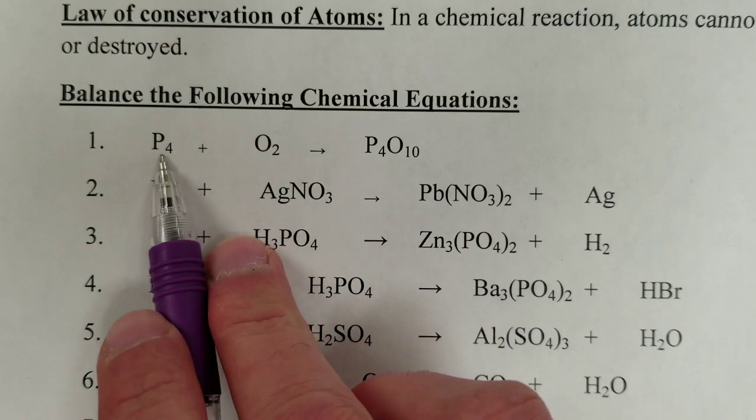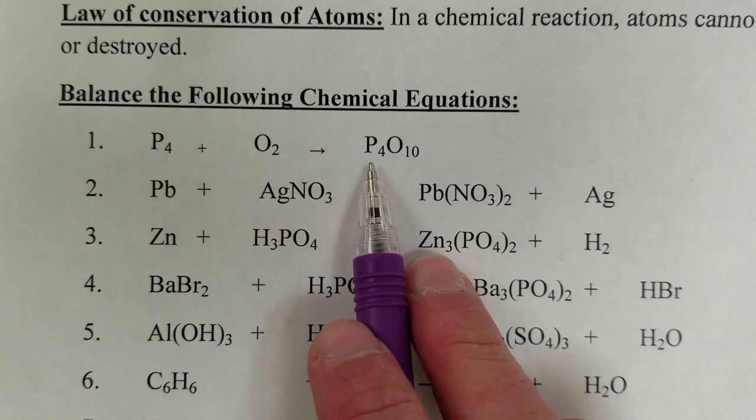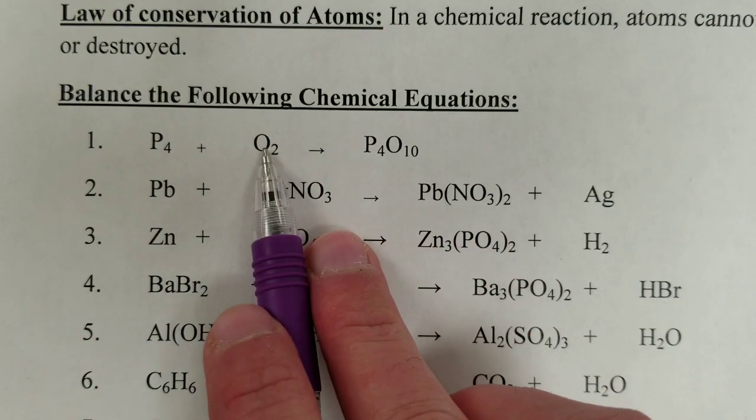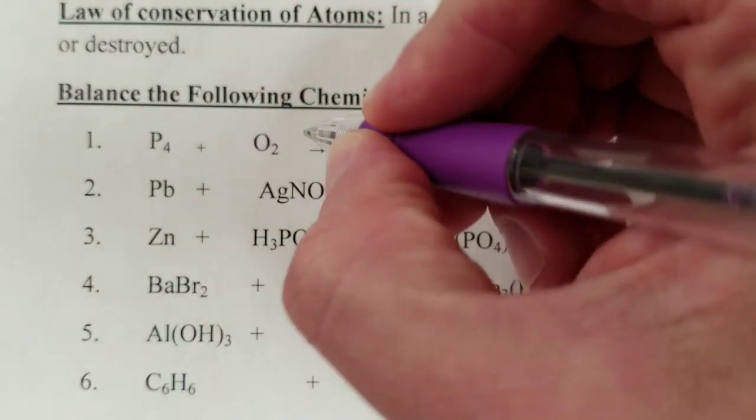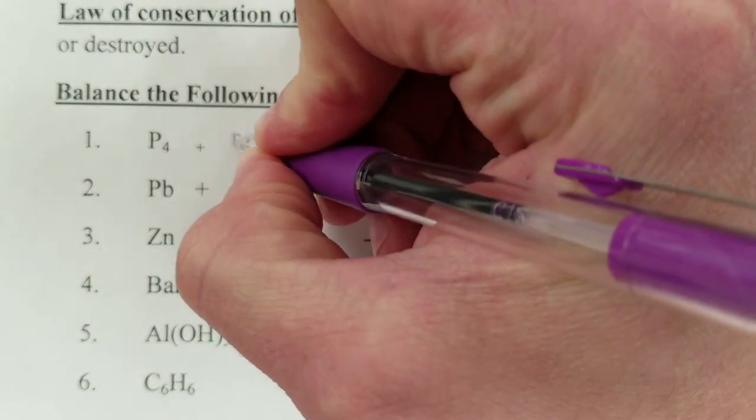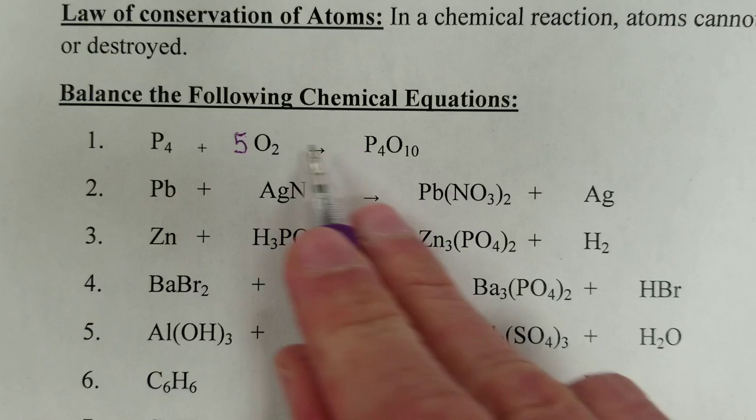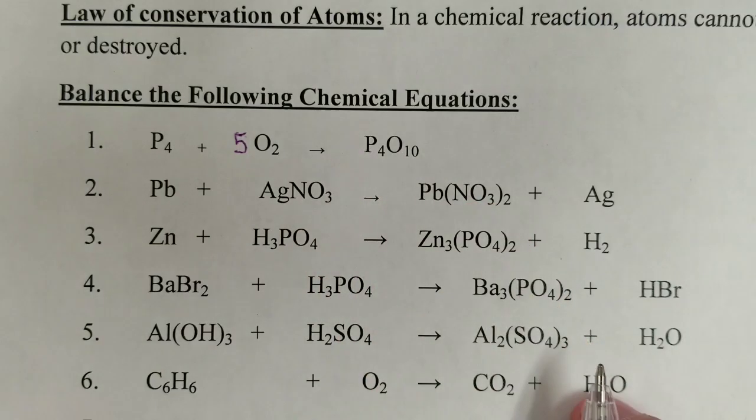For example, this first one, there's four phosphors here, four phosphors here, so that's fine, but ten oxygens here and two oxygens here is not fine. So we're going to say, if there are five of these, five times two is ten oxygens, which balances ten oxygens, this would be acceptable.